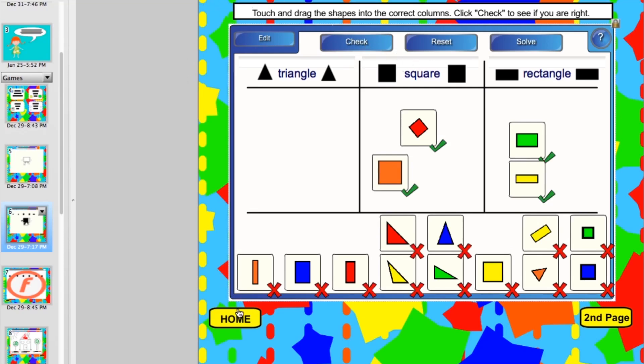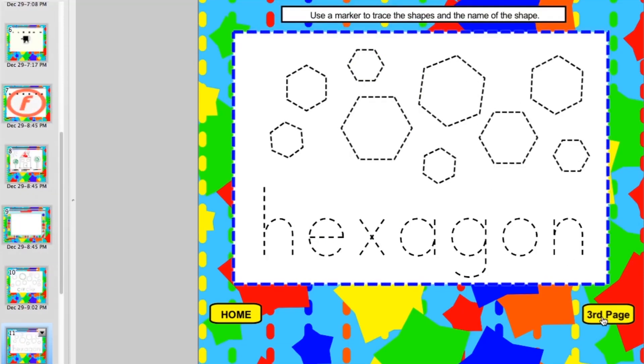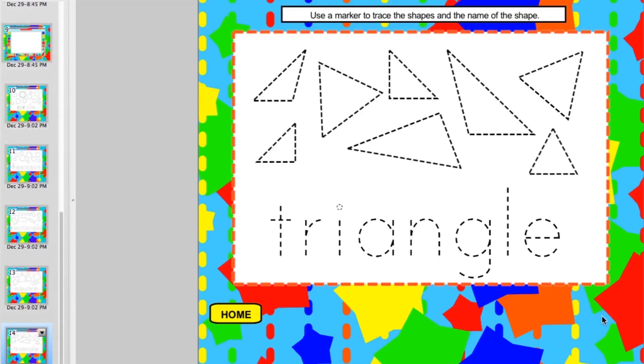In the last game students will practice drawing and tracing the shapes and also the shape words. There's big ones and small ones. This will help them with word recognition of the shapes. And then you will click on that second page button and it will go to several different other shapes for them to practice.